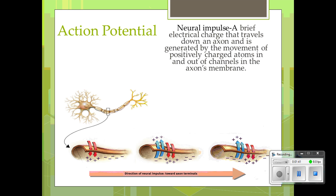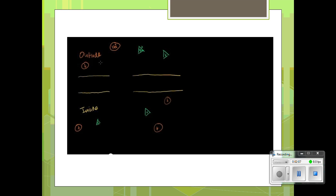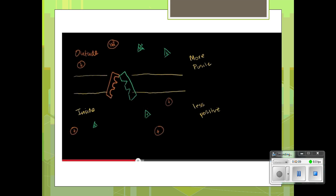Usually there are more positives outside, and they want to move toward the negative side, so they enter the neuron. Ions are exchanged — sodium is pumped in and potassium is pumped out. Neuron membranes are usually impermeable, but neurotransmitters weaken it. Sodium-potassium pumps allow sodium to pump in and potassium to pump out.